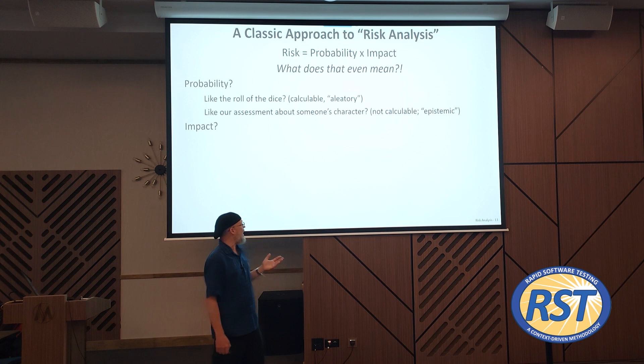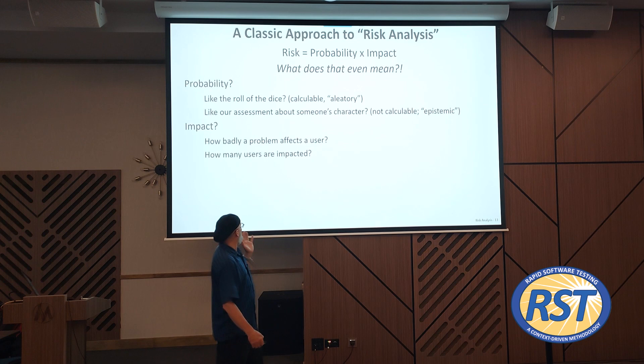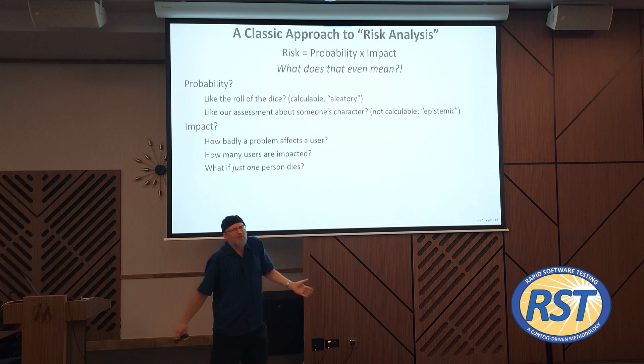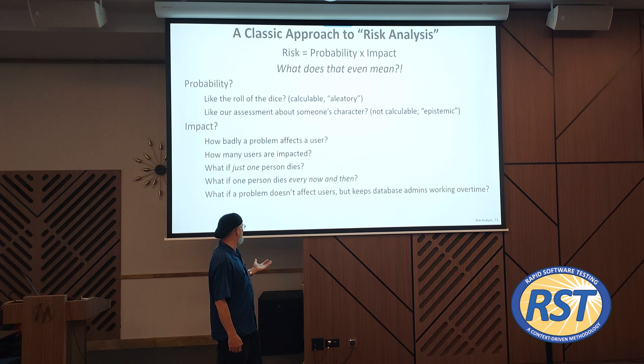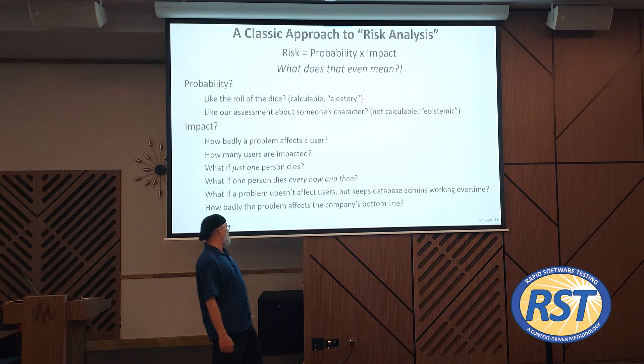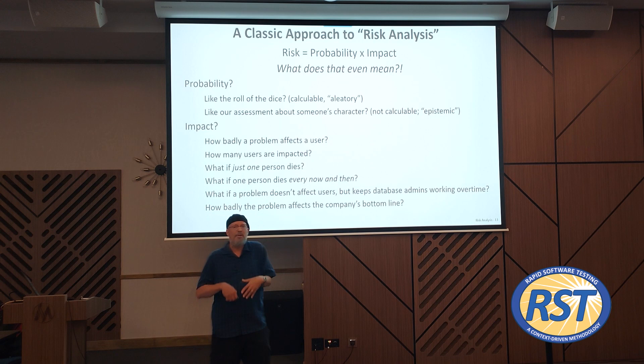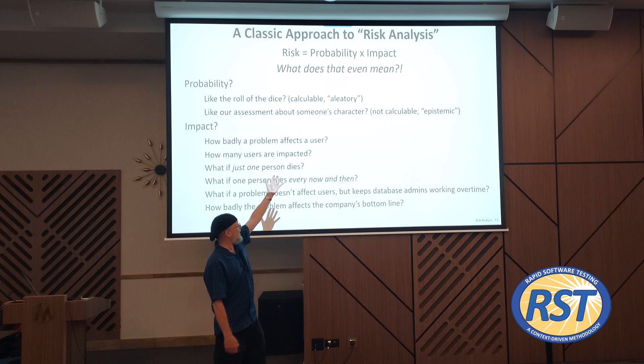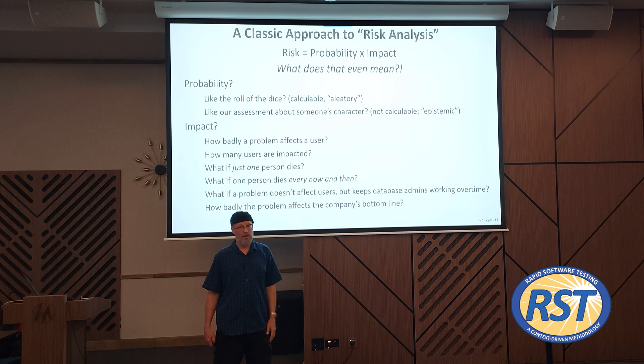Probability is a guess. What about impact? How badly a problem affects a user, how many users are impacted, what if people die — one person or hundreds. If we don't know about what's going to happen, that's just a guess. What if a problem doesn't cause anyone to die but keeps operations people working after hours? What if it only affects the company's bottom line, or doesn't affect the bottom line at all but affects the company's reputation? One kind of guess, another kind of guess. The product of guess times guess is guesses squared.